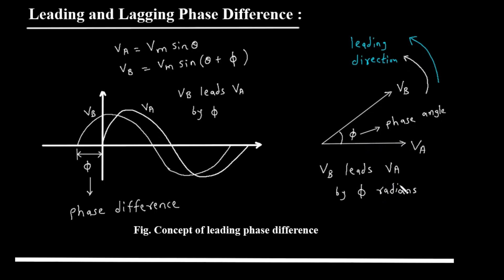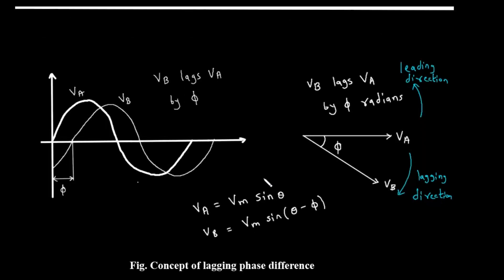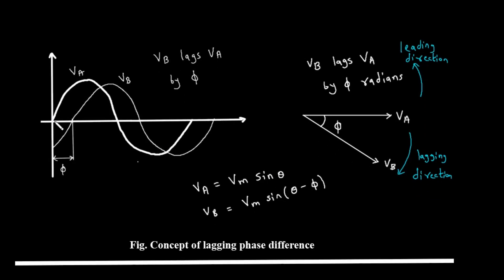Next, let's look at the concept of lagging phase difference — this is the opposite scenario. In the waveform diagram, you can see that the wave VB now reaches its peak after the wave VA. It is lagging behind. The phase difference is again the angle phi. If VA is Vm times the sine of theta, then VB is Vm times the sine of theta minus phi. The minus phi signifies a shift to the right, or a delay in phase. The phasor diagram again makes this very clear. The phasor for VA is on the reference axis. Since VB lags VA, we draw its phasor at an angle of phi in the clockwise direction from VA — clockwise is the lagging direction. The diagram simply states: VB lags VA by phi radians.